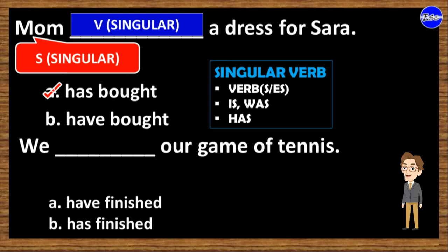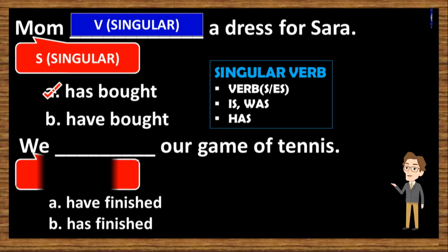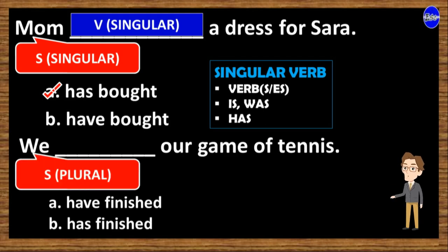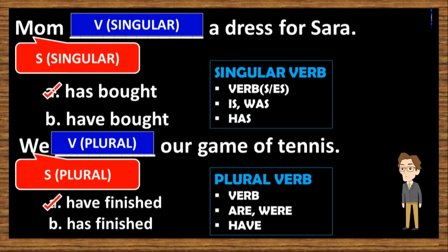We ___ our game of tennis. A, have finished. And B, has finished. As you see, the subject of the sentence is 'we,' and it is plural. So, we have to choose plural verb too. Then the answer is option A — have finished.